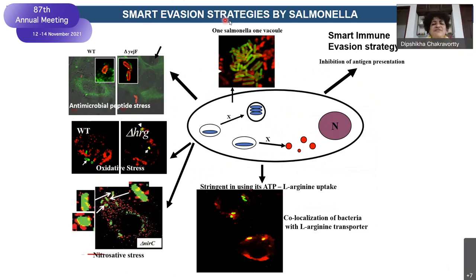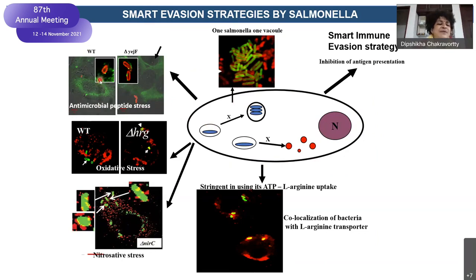All the smart evasion strategies of Salmonella are vacuole-driven. For example, if Salmonella ends up in epithelial cells, which have very high antimicrobial peptide stress, because it is now within this naive vacuole, the bacteria survives very well — the stress is neutralized. But if you knock out the gene helpful in neutralizing this, the bacteria dies. All of this is possible because it lives within the modified Salmonella-containing vacuole, or SCV.